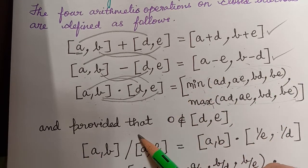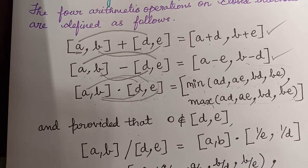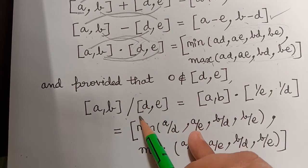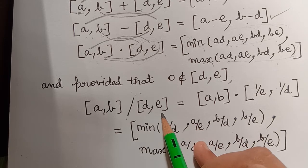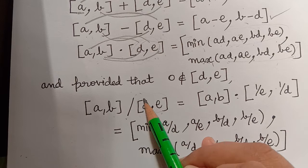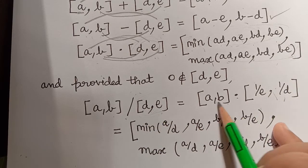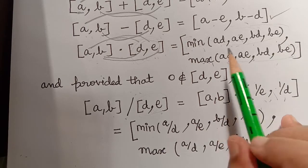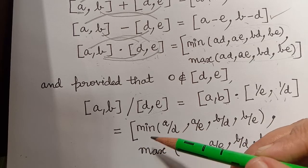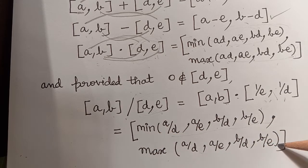Importantly, 0 should not be an element of closed interval [d, e]. For division, [a, b] divided by [d, e] is similar to multiplication, where [d, e] is replaced by [1/e, 1/d]. Then as a product, we choose the minimum and maximum of all the resulting values.